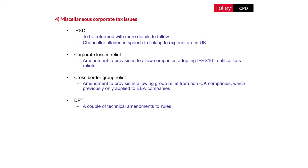There are a couple of technical amendments to Diverted Profits Tax, such that DPT is now going to be considered as a tax covered by the UK double tax treaty network, which means that double tax relief will be available for companies caught under the DPT provisions. There's also going to be an interaction between the DPT review period and company tax return inquiries, which means it will not be possible to amend a company tax return where the DPT review period is still open.